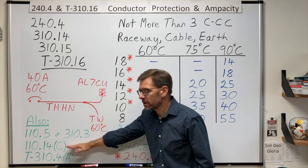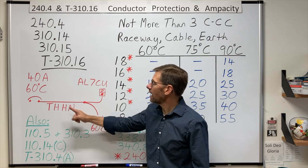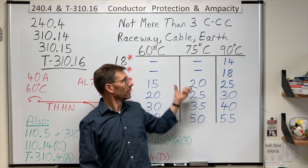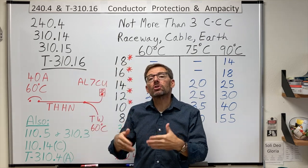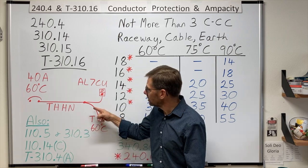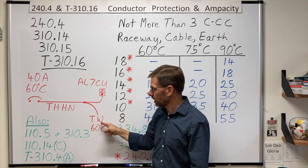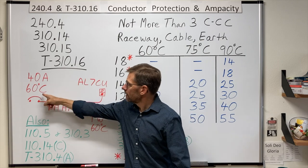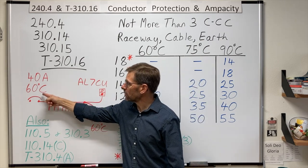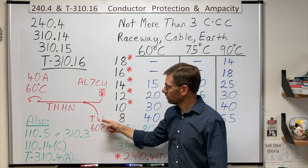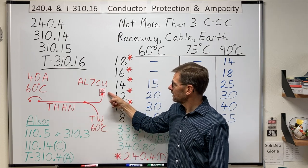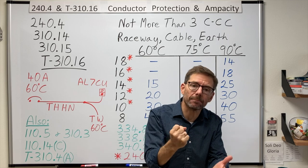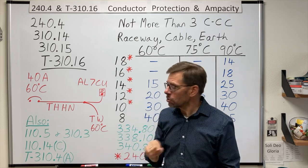So what 110.14c tells me is that I have to pick an ampacity for this wire, from the column with the lowest rating of any connected termination, conductor, or device. In this case, I'm looking at 60 degrees. The breaker is rated for 60 degrees. This connected wire rated for 60 degrees. And this, well, this lug, what's this? So you don't generally see a temperature rating stamped on a lug. But what you do see is something like this. It lists the types of metals that the lug can be used with, aluminum or copper.